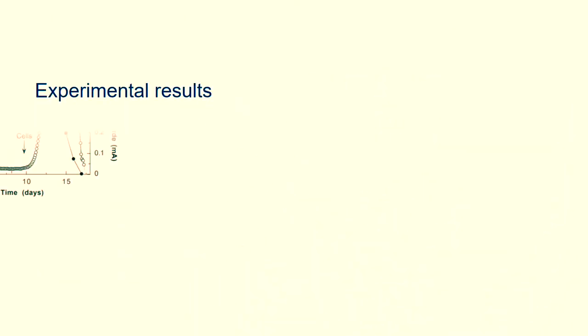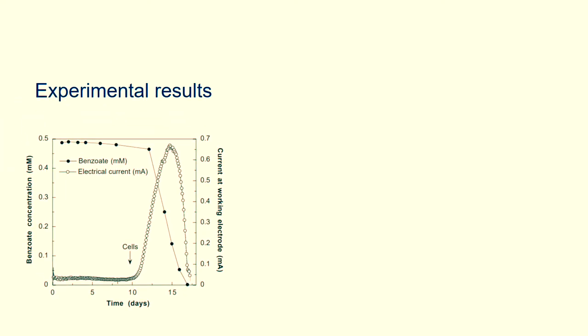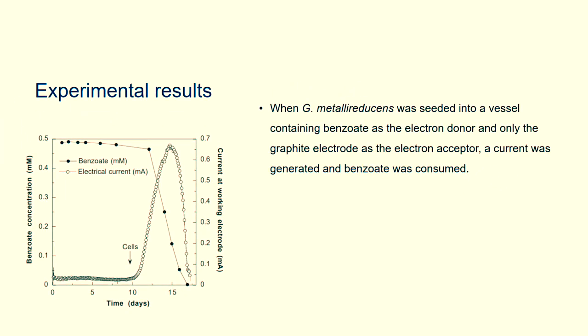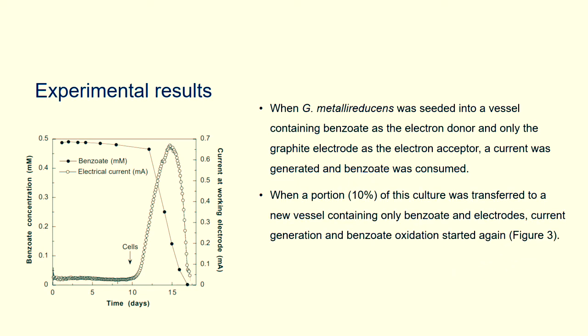When G. metal reducins was seeded into a vessel containing benzoate as the electron donor, and only the graphite electrode as the electron acceptor, a current was generated and benzoate was consumed. When a portion 10% of this culture was transferred to a new vessel containing only benzoate and electrodes, current generation and benzoate oxidation started again, figure 3.